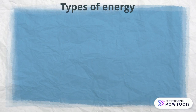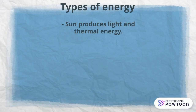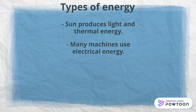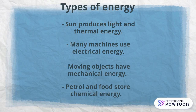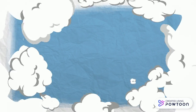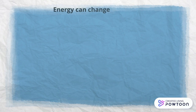Types of energy. Sun produces light and thermal energy. Many machines use electrical energy. Moving objects have mechanical energy and petrol and food store chemical energy. Energy can change from one form to another.